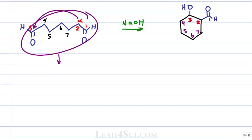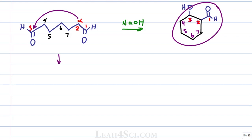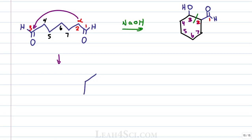I'm going to take this 7-carbon chain and redraw it looking like my final product. We can't simply redraw it as we see it because carbon number 2 and 3 form a new bond to each other — they're not bonded initially. So when we draw it out, we draw a bond between 1 and 2, no bond between 2 and 3 because that forms later. Then we go down: 7, 6, 5, 4, 3.